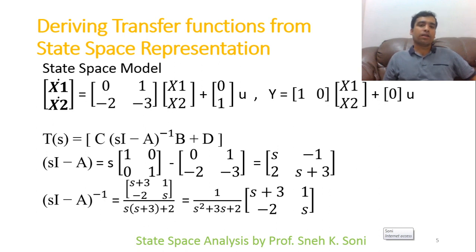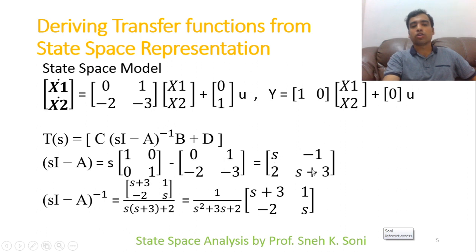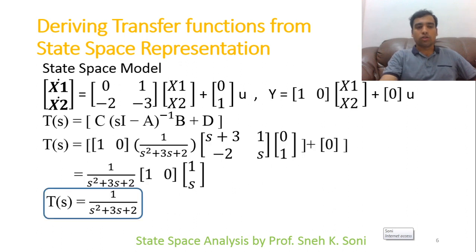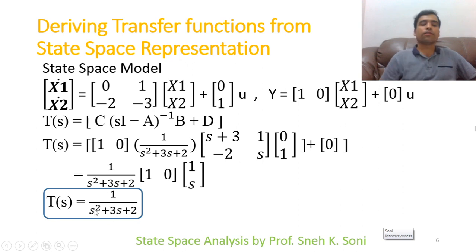Now we find (sI − A)⁻¹. We know that the inverse equals the adjoint of the matrix divided by its determinant. For a 2×2 matrix, we use the shortcut: interchange the diagonal terms and change the signs of the off-diagonal terms to get the adjoint [s+3, 1; −2, s]. The determinant gives s² + 3s + 2, so (sI − A)⁻¹ = (1/(s² + 3s + 2)) · [s+3, 1; −2, s]. Placing this with C = [1, 0], B = [0; 1], D = 0 and multiplying, the transfer function is 1/(s² + 3s + 2).